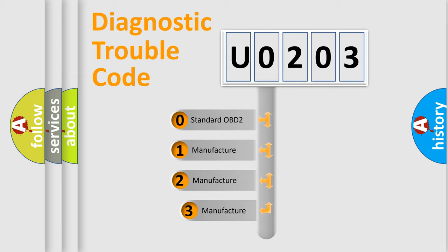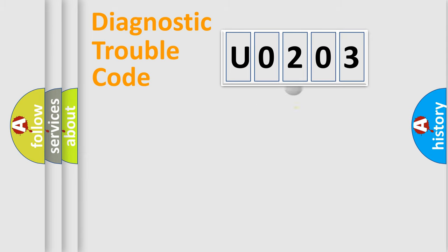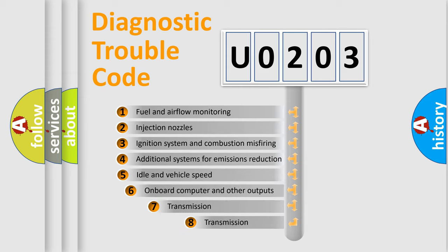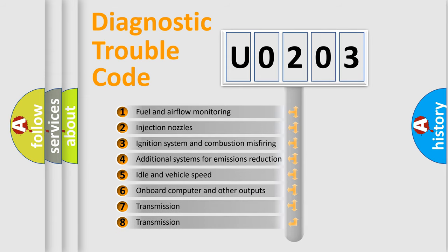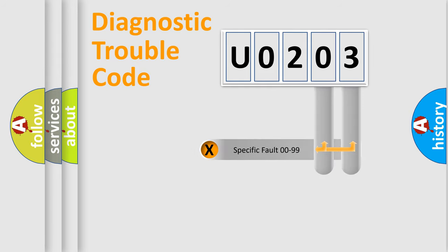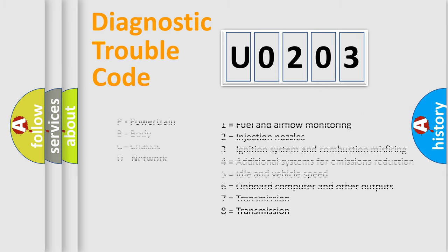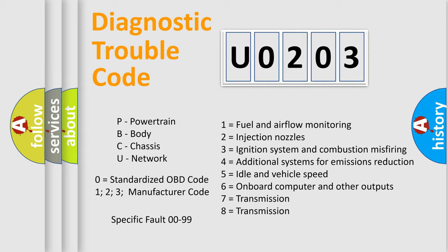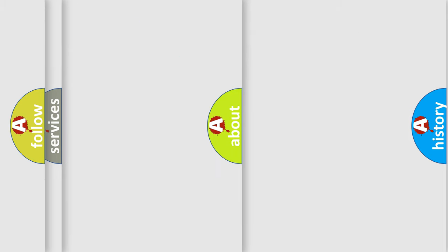If the second character is expressed as zero, it is a standardized error. In the case of numbers 1, 2, or 3, it is a manufacturer-specific error. The third character specifies a subset of errors. The distribution shown is valid only for the standardized DTC code. Only the last two characters define the specific fault of the group. Let's not forget that such a division is valid only if the second character code is expressed by the number zero.